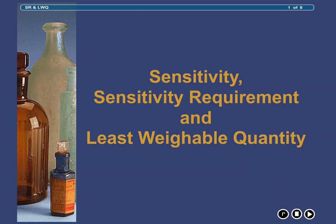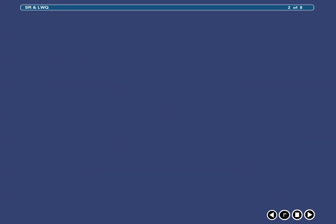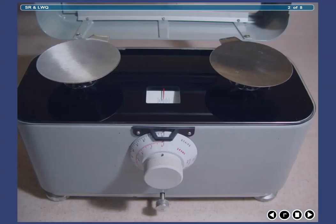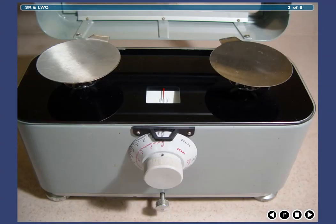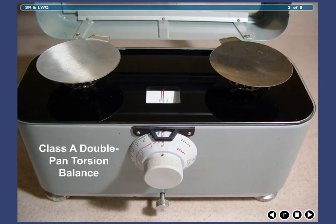In order to fully understand the concept of weighing as it relates to the use of prescription balances, it is important to have a solid understanding of the terms sensitivity, sensitivity requirement, and minimum weighable quantity, commonly referred to as least weighable quantity. The narration that follows, along with the accompanying slides, will enhance your understanding of prescription balance sensitivity and sensitivity requirements as they relate to the Class A double pan torsion balance, also known as the Class III torsion balance, which is shown here.